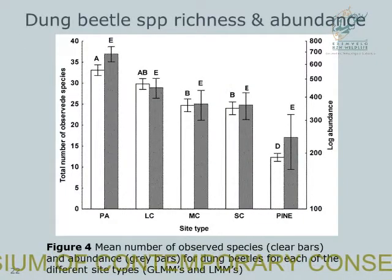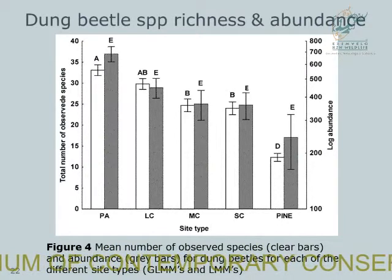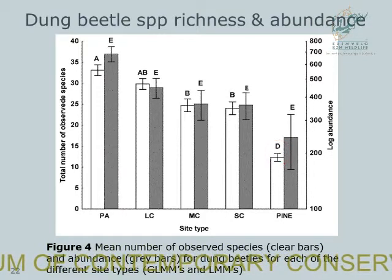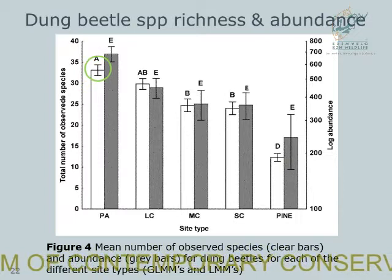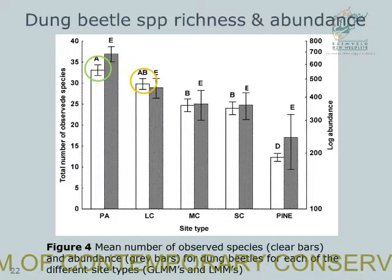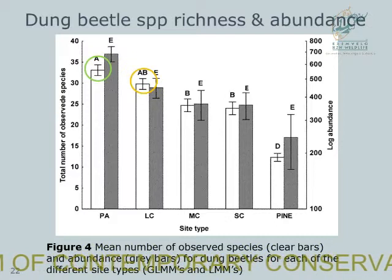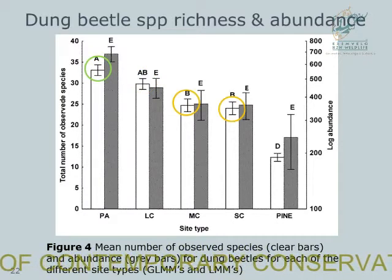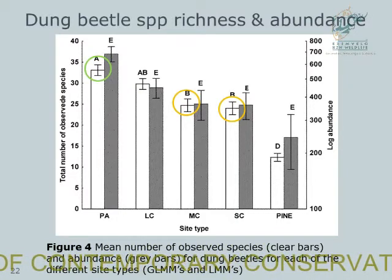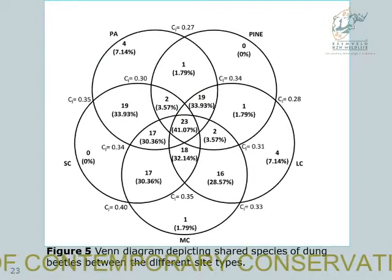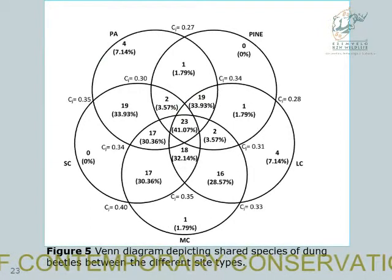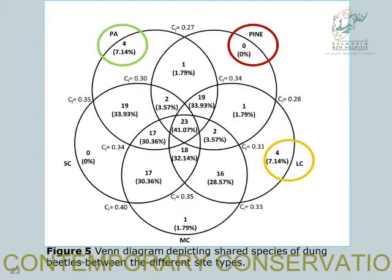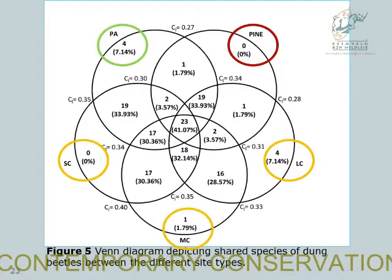This figure shows the differences in dung beetle species richness and abundance between the different site types. As expected, pine plantations had the lowest number of dung beetle species. The protected area had the most, but corridor size was found to influence dung beetle species richness, with large corridors having a similar number as the protected area, and medium and small corridors housing significantly fewer species. There was no difference in dung beetle abundance between site types. The protected area and large corridors each had four unique species, medium corridors had one, and small corridors had none.